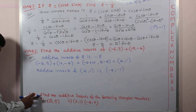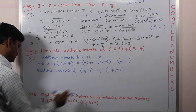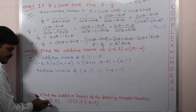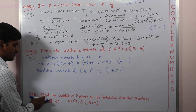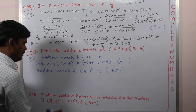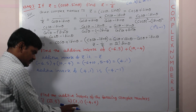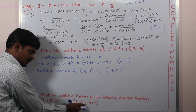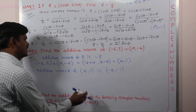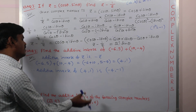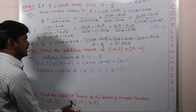Similarly, you can practice these questions. The additive inverse of root 3 comma 5 is directly minus root 3 comma minus 5. For the next problem, before applying the formula you need to first find the product of the two complex numbers, convert it into the form a plus iota b, and then write the additive inverse easily.